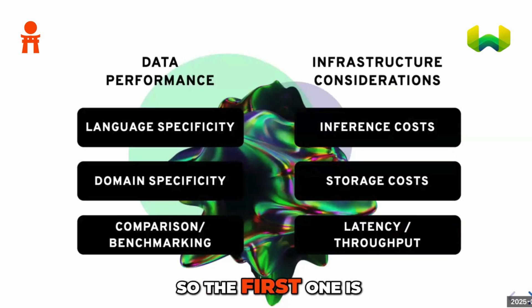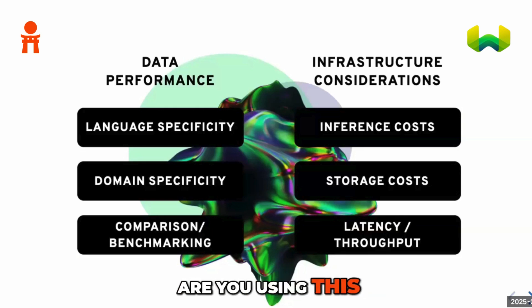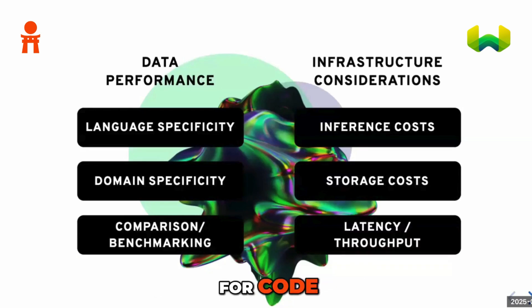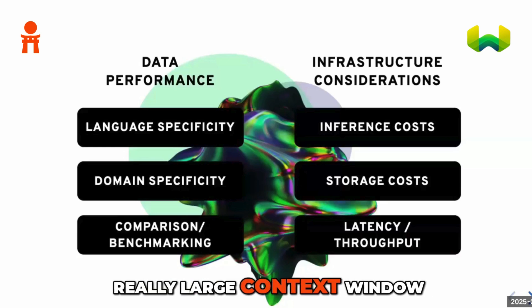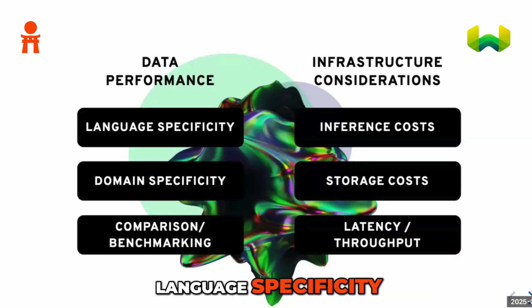The first subcategory is language specificity. Are you using this on purely English data? Are you using this for multimodal data? Are you using this for code? Do you need a really large context window? That all falls under language specificity.